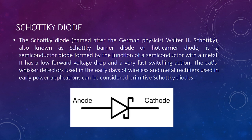The Schottky diode, named after German physicist Walter H. Schottky, is also known as a Schottky barrier diode or hot carrier diode. It is a semiconductor diode formed by the junction of a semiconductor with a metal. It has very low forward voltage and very fast switching action. The Schottky detector used in the early days of wireless and metal rectifiers used in early power applications can be considered primitive Schottky diodes.